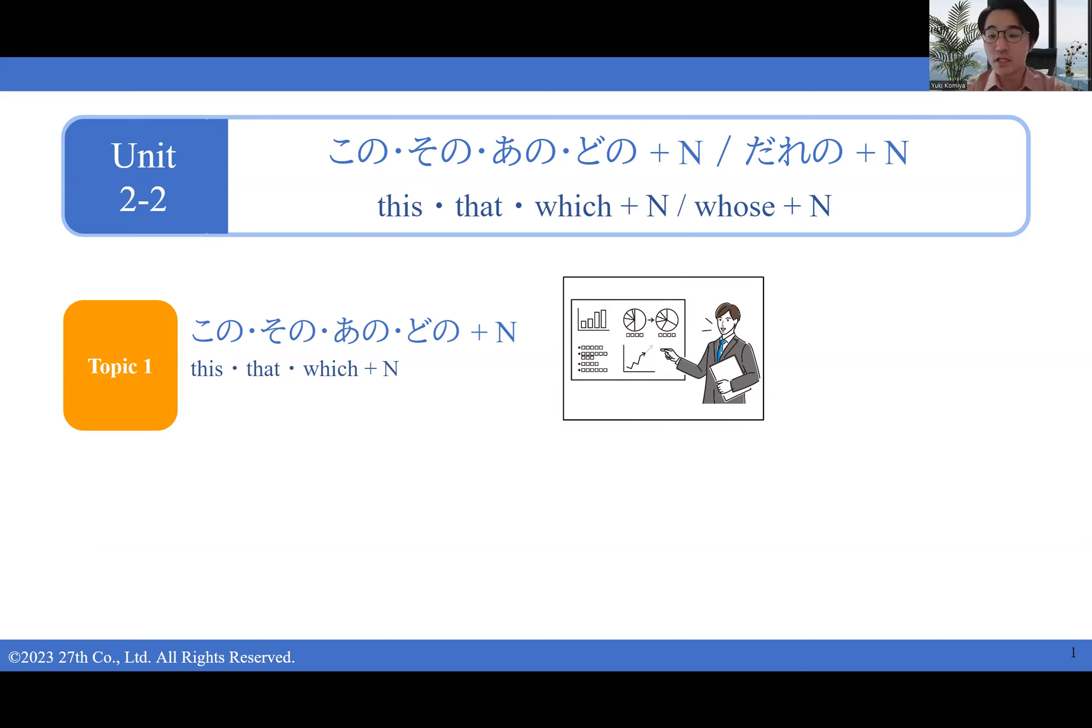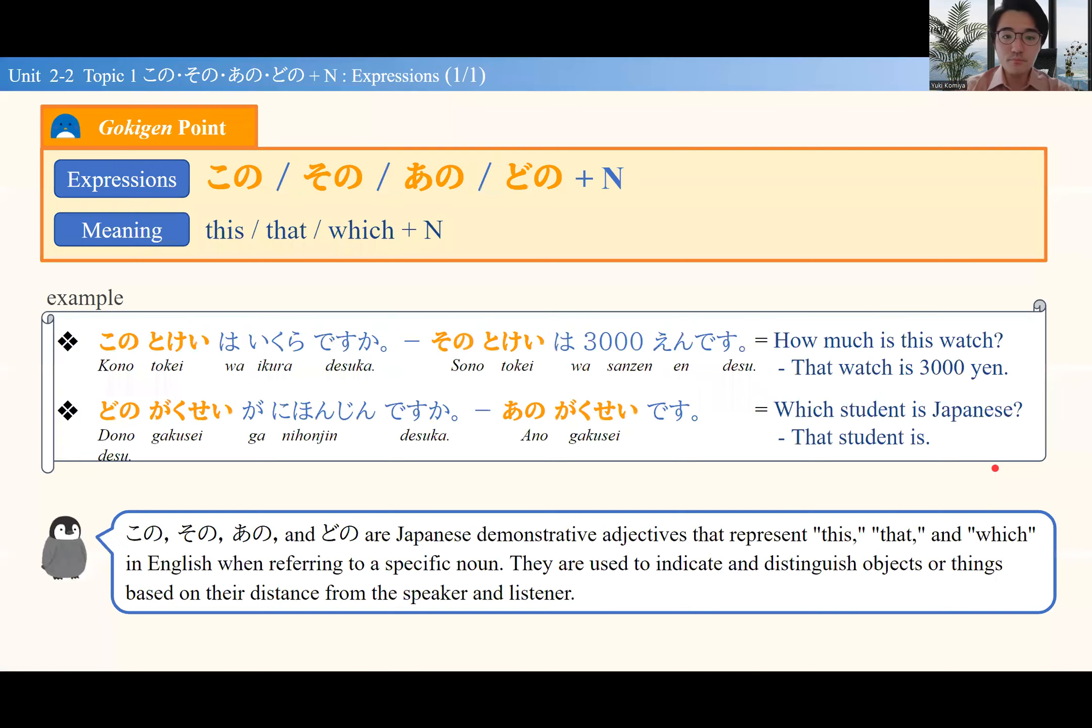We can learn to say things like 'this bag,' 'that watch,' or 'that bicycle.' Each of these pronouns we learned in Lesson 1—これ、それ、あれ、どれ—can take the の ending to connect to nouns.